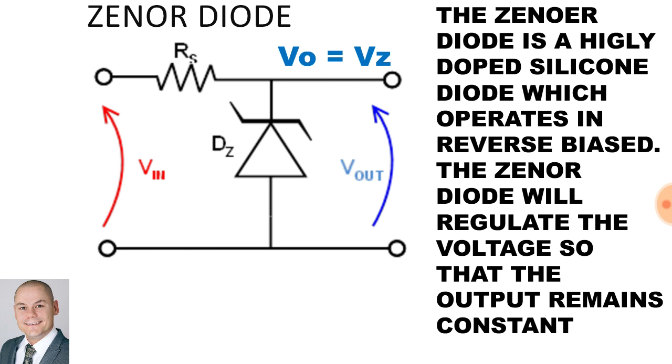A Zener diode is a highly doped silicon diode which operates in reverse bias. The Zener diode will regulate the voltage so that output remains constant. We have a Zener voltage regulator and this means that the output voltage will be the same as the Zener voltage and we would end up with a constant DC output.